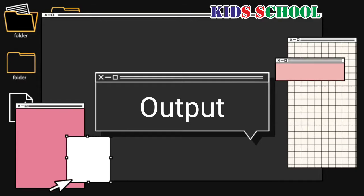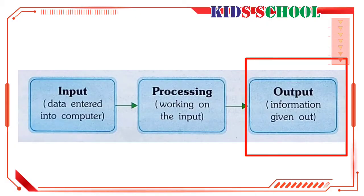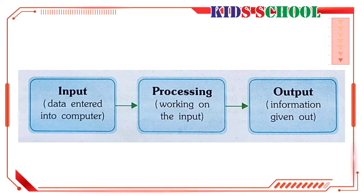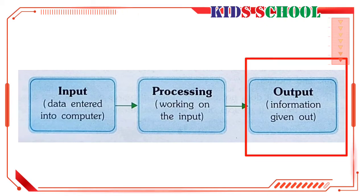And the third one is output. Information given out by a computer after processing the input is called output. The output can be seen on the monitor or printed on paper.